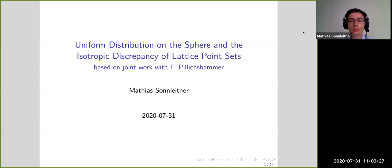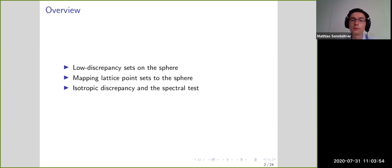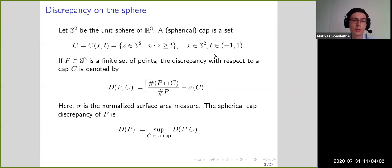I'm reporting about joint work with Friedrich Pillichshammer, part of which is from last year and part of which is still ongoing work. In detail I will tell you about low discrepancy sets and sequences on the sphere, then make the connection to lattice point sets with a special kind of map, and then about the relation between the isotropic discrepancy and the spectral test of lattice point sets.